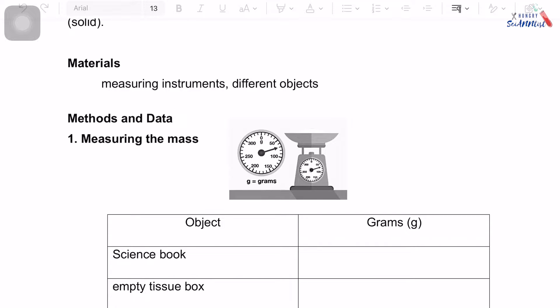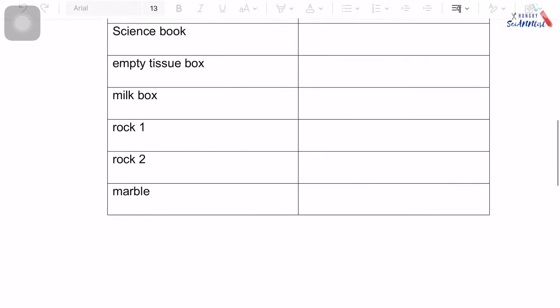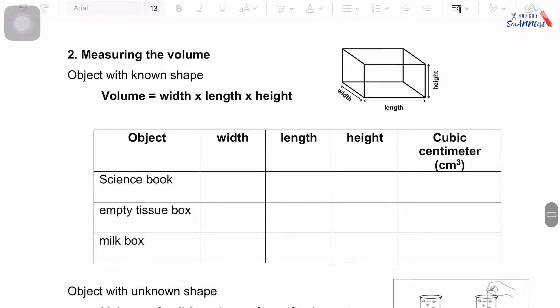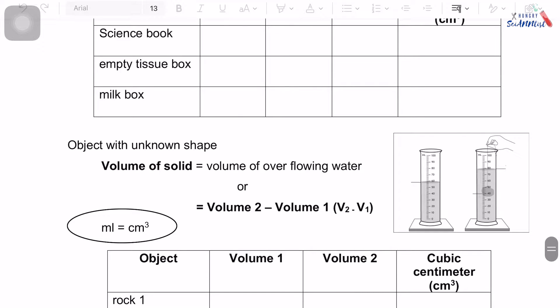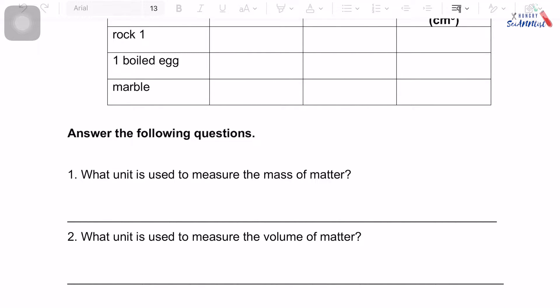This experiment has two parts. One, measuring the mass. And two, measuring the volume. We have geometrical shaped objects and unknown shaped objects. And the last part will be our guide questions. So let's begin.